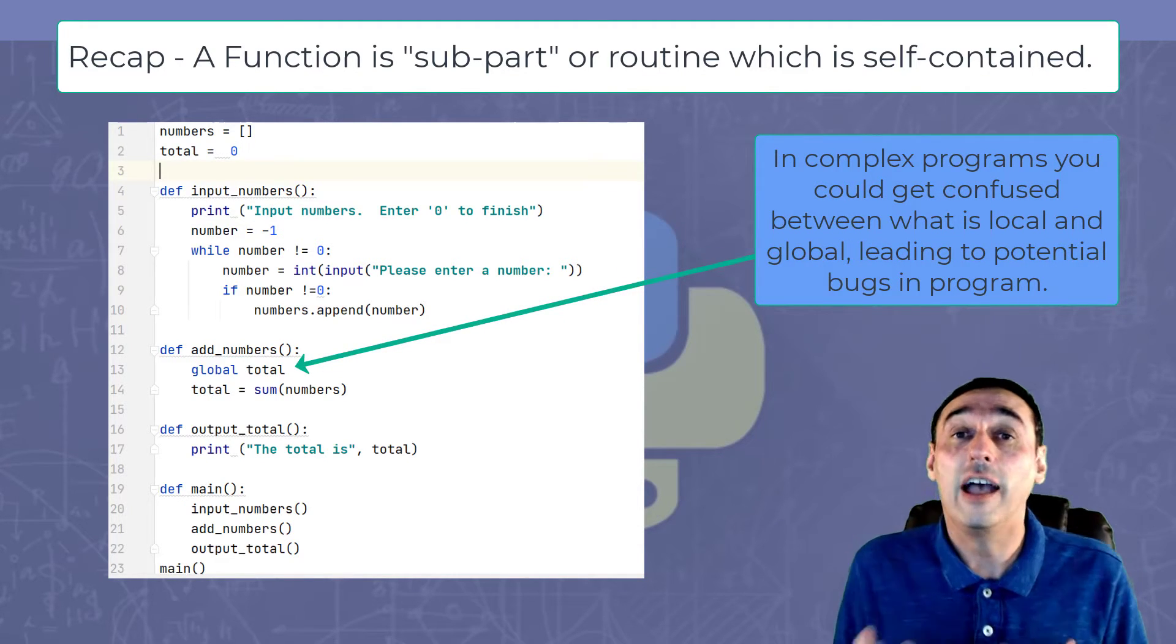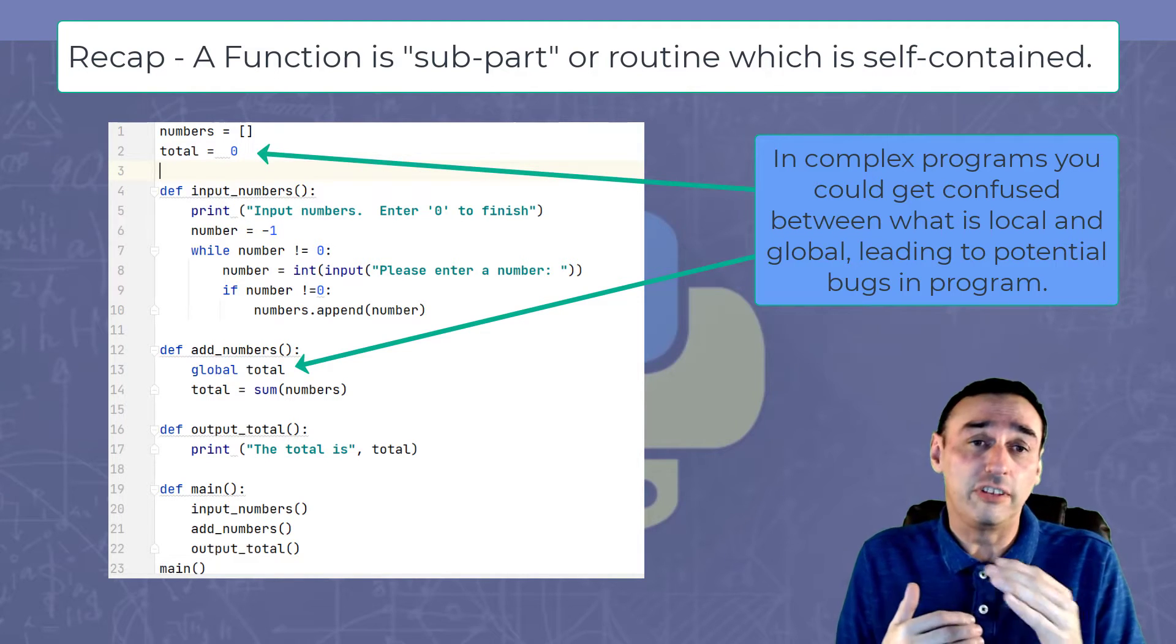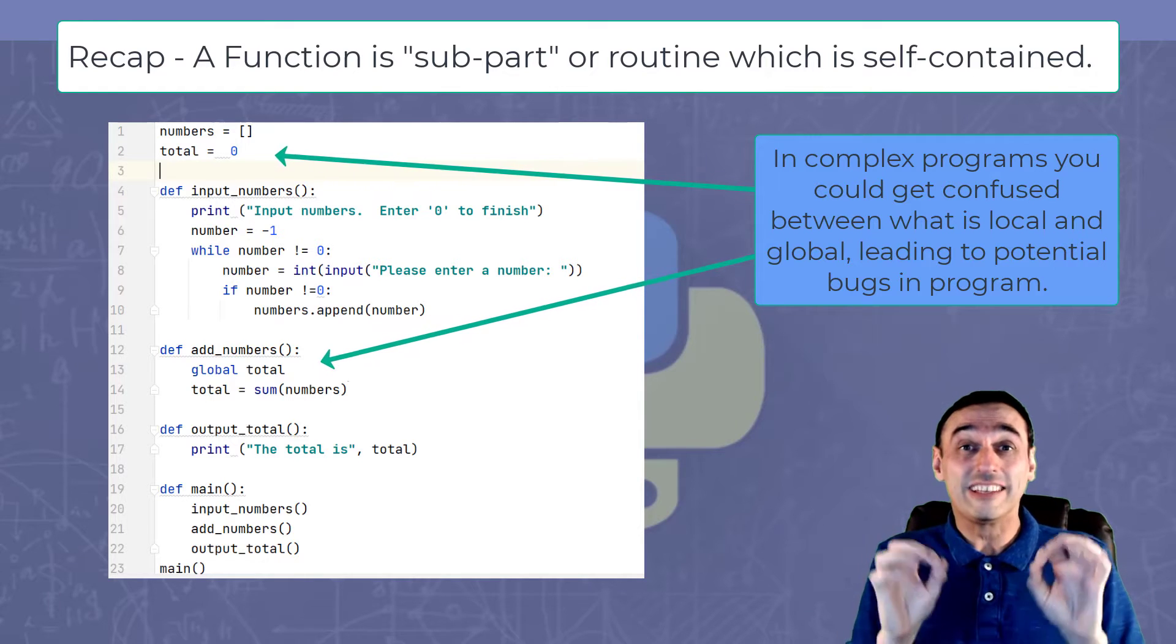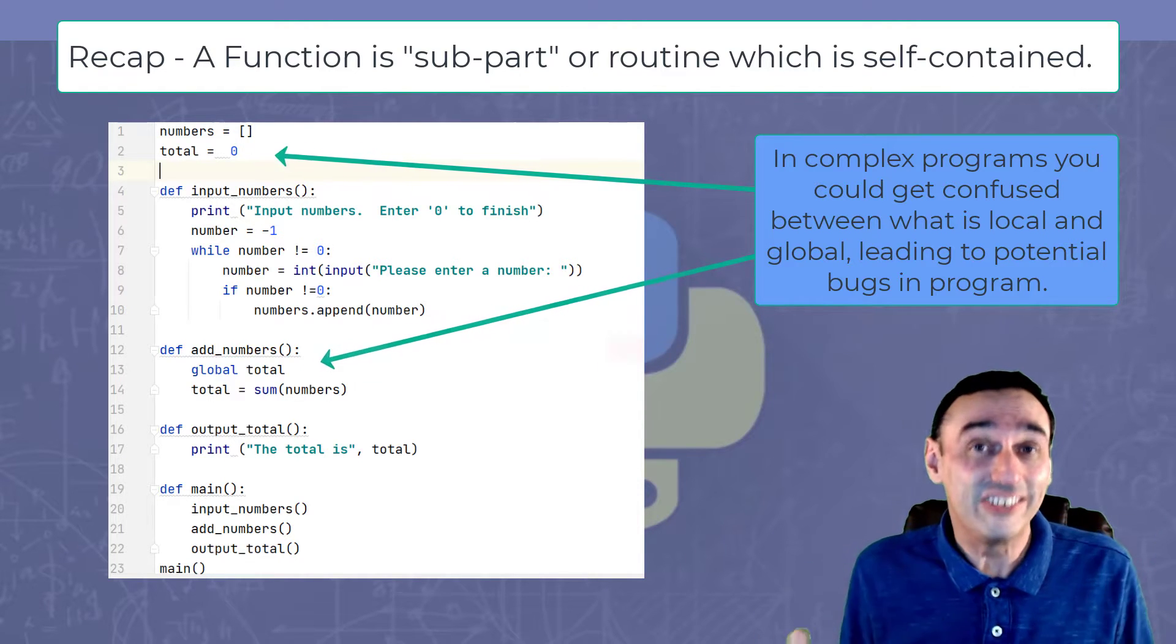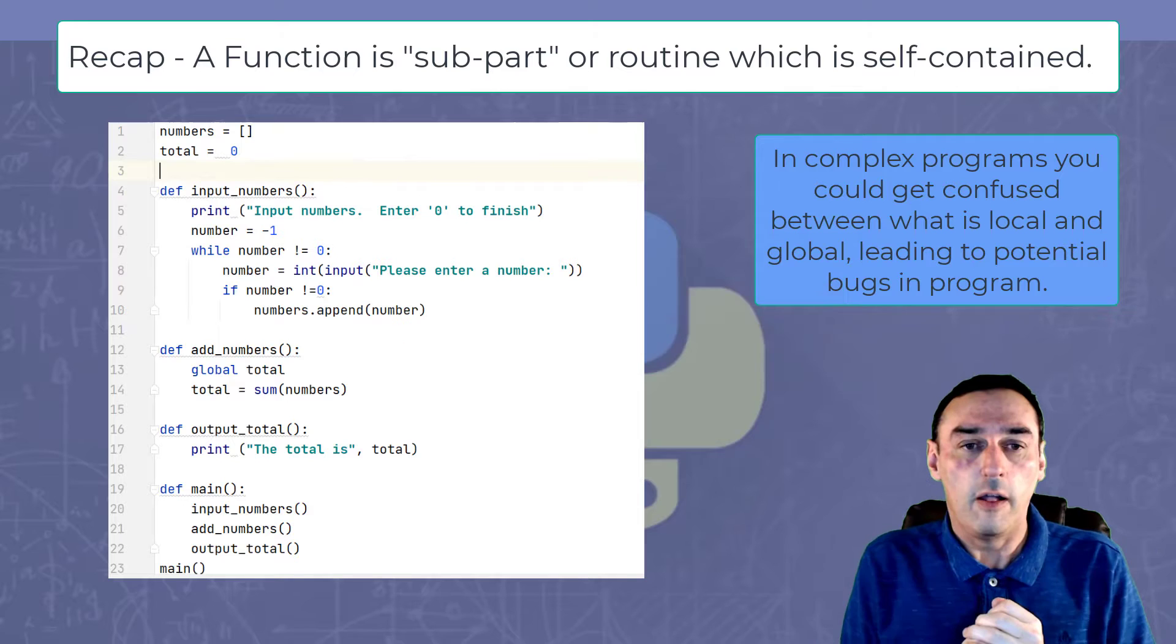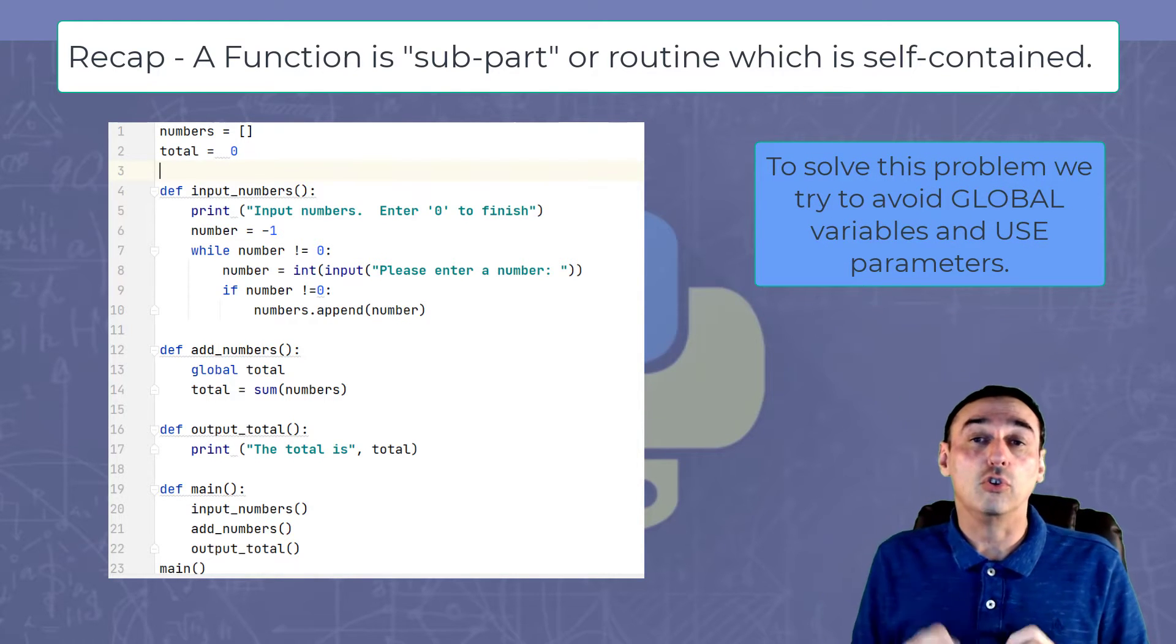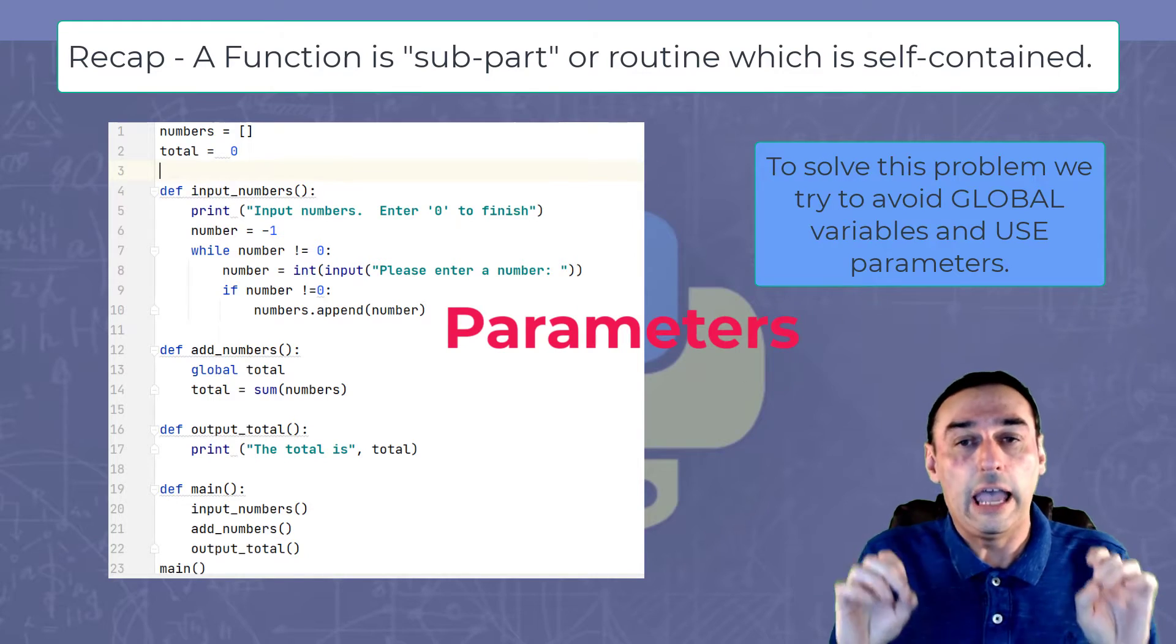If we look at this program we've got here, the total variable which exists within the function add_numbers, now we don't know the difference between the total global and the total local, so we have to define it in Python using the command global. This is confusing, particularly if you have lots of variables.